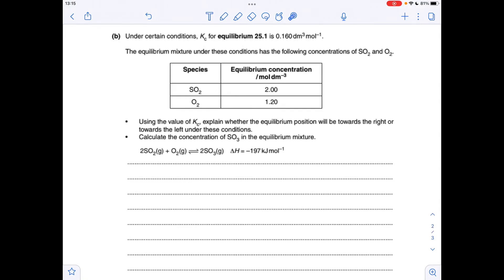Moving on to part B now. So for the first bullet point, use the value of Kc to explain whether the equilibrium will be towards the right or the left. So you can see that the Kc value is less than 1, so that means the equilibrium is to the left.